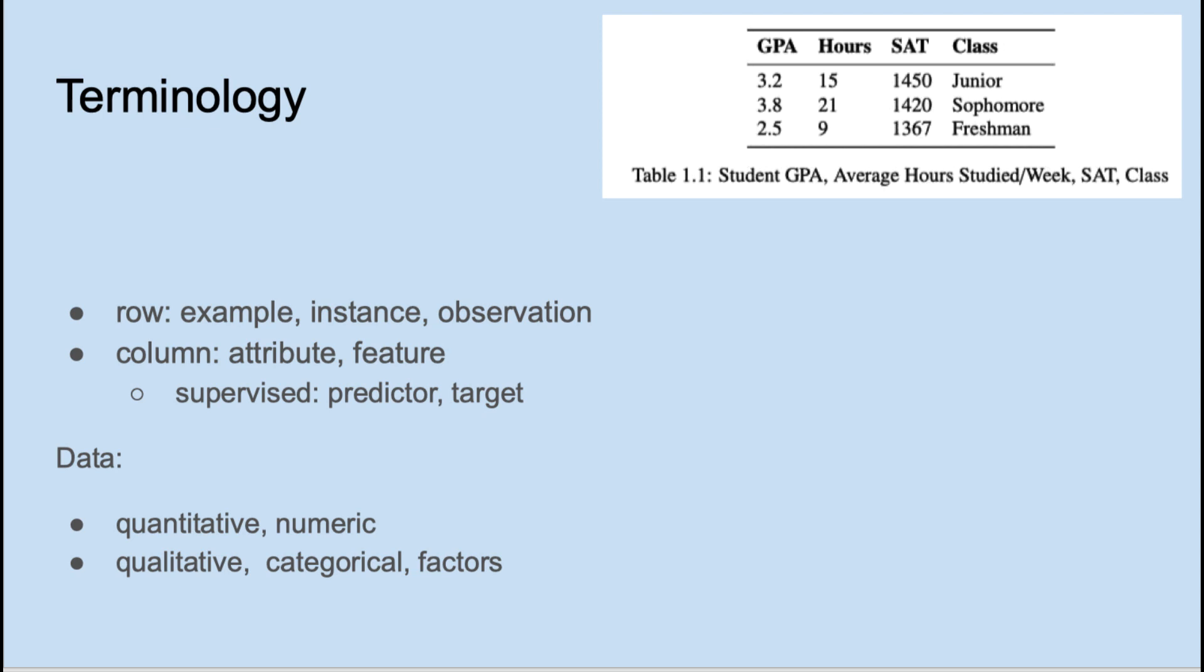Most of our data will either be quantitative or qualitative. Quantitative or numeric data in this table is the GPA, the hours, and the SAT score. Qualitative data is also called categorical data or factors. Qualitative data encodes class membership. In this case, they're literally classes, junior, sophomore, or freshman.